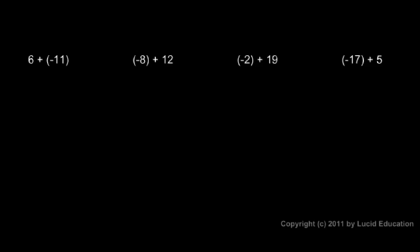Now with that in mind, you should be able to do problems like this in your head. I'll explain my thought process as I go through these. This first one: 6 plus negative 11. The first thing I do is just think of the absolute values of the numbers — ignore the negative signs — think 6 and 11, and then subtract the big one minus the small one. So I'm going to think in my mind 11 minus 6, and that's 5, and I write that down.